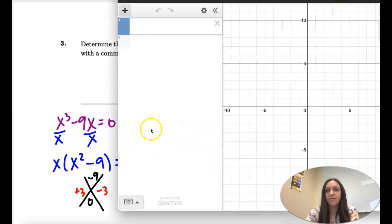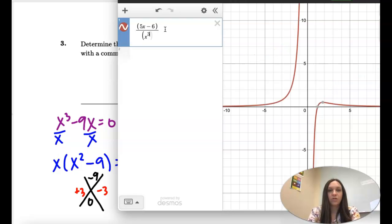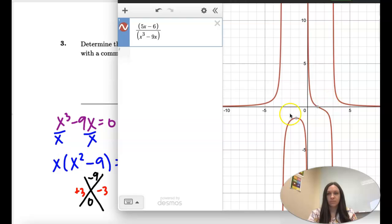So I'm going to graph to verify. Five x minus six divided by x cubed minus nine x. And I can see the asymptotes right here. Here's negative three, here's zero, and here's positive three.